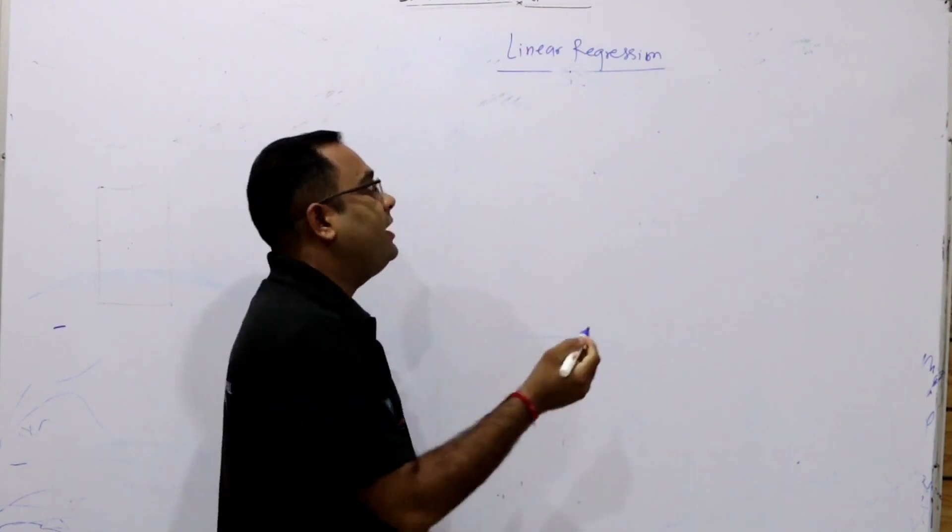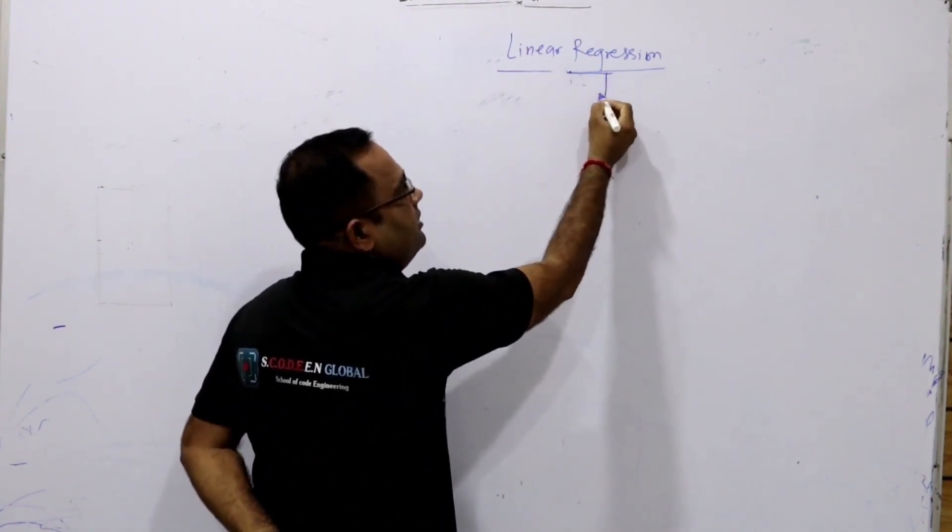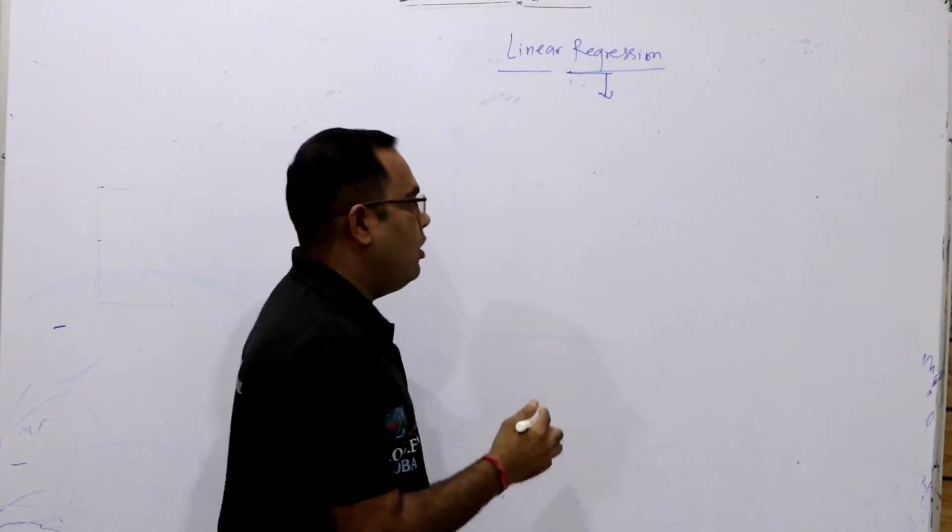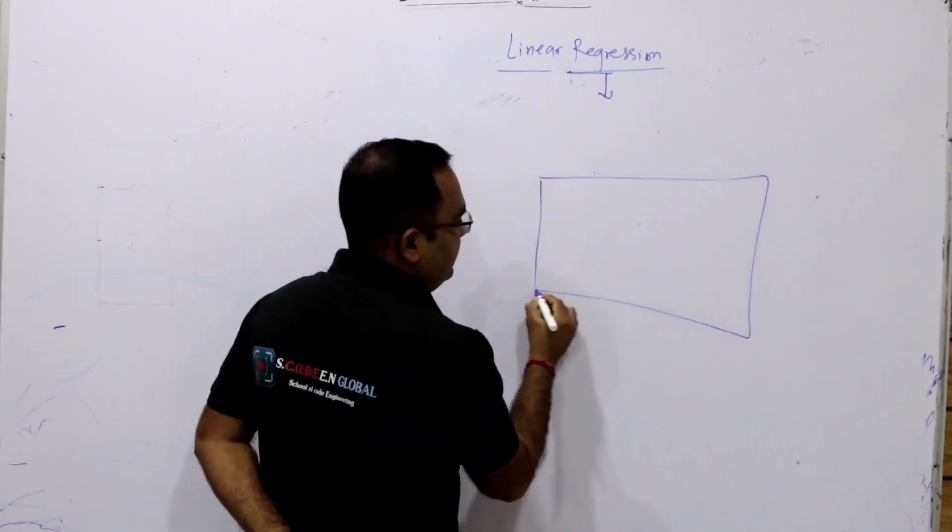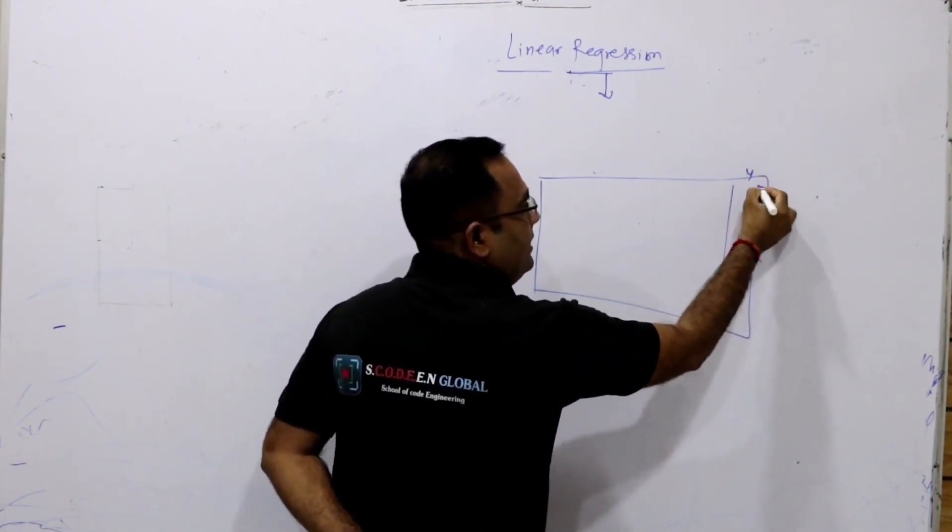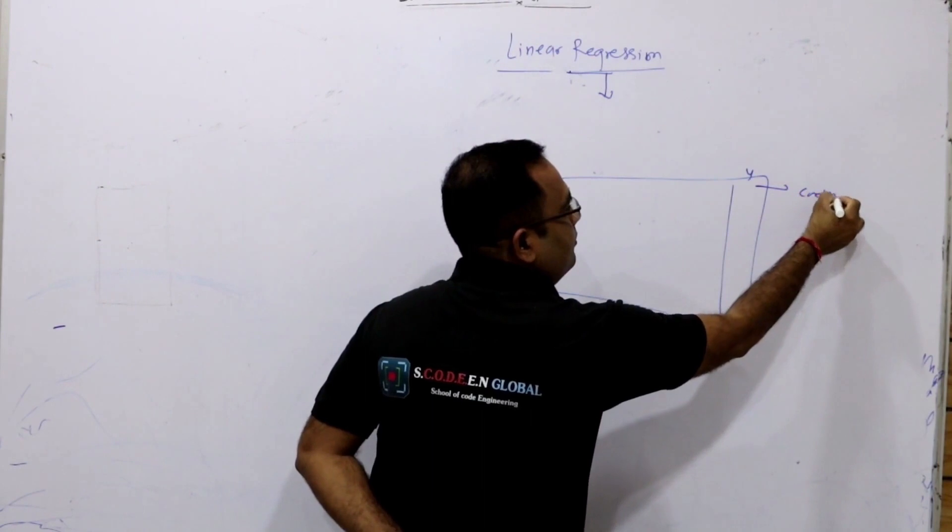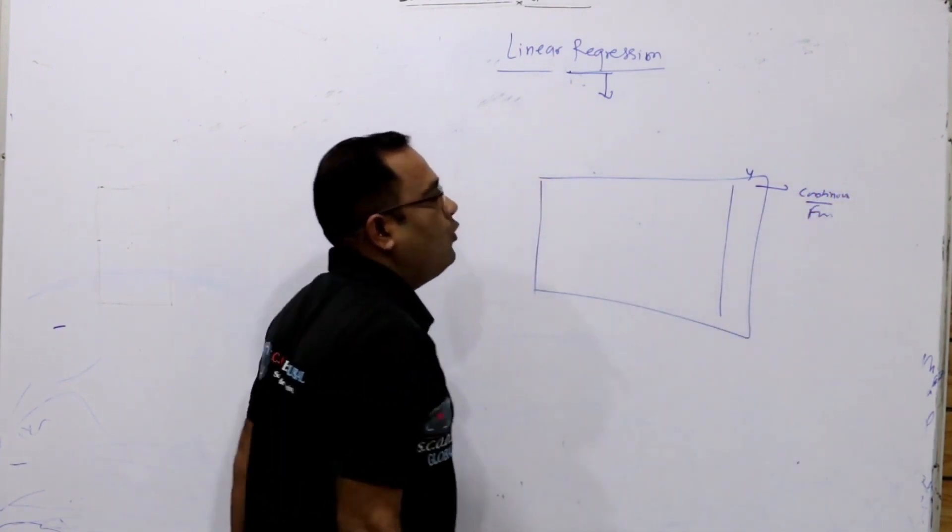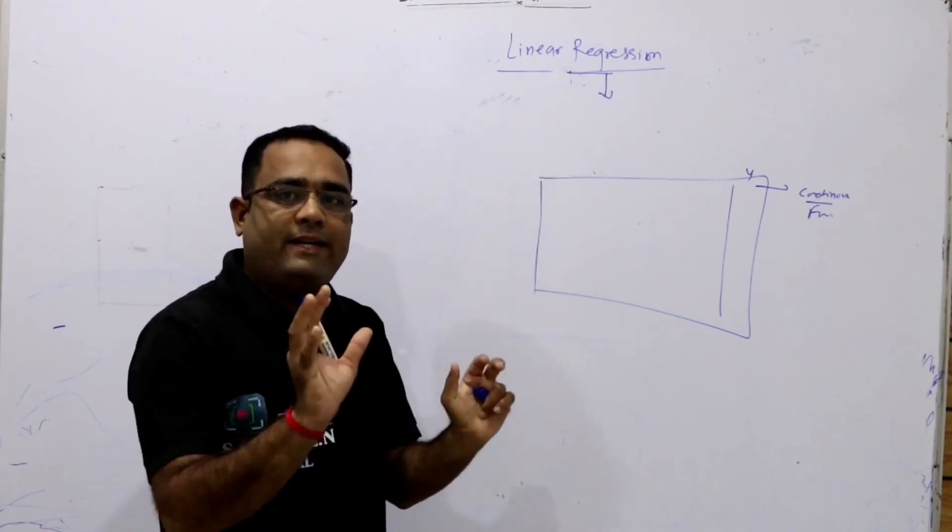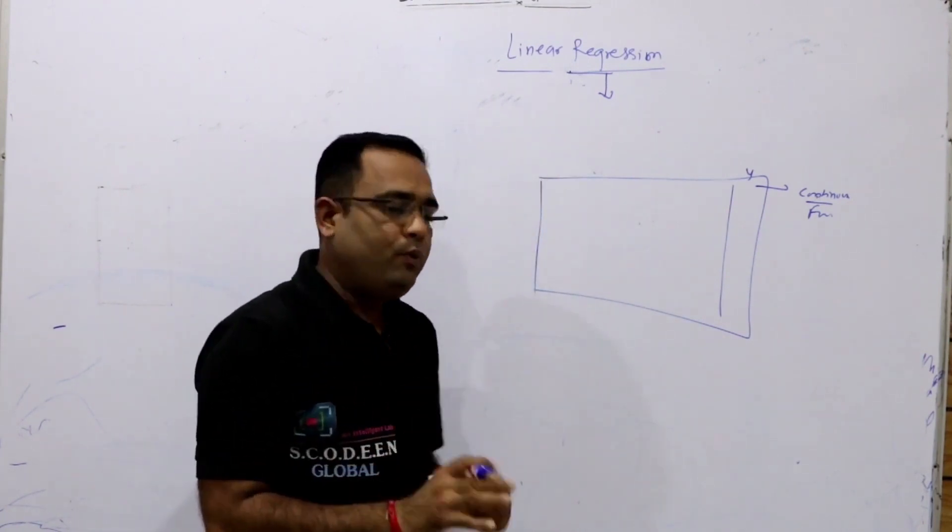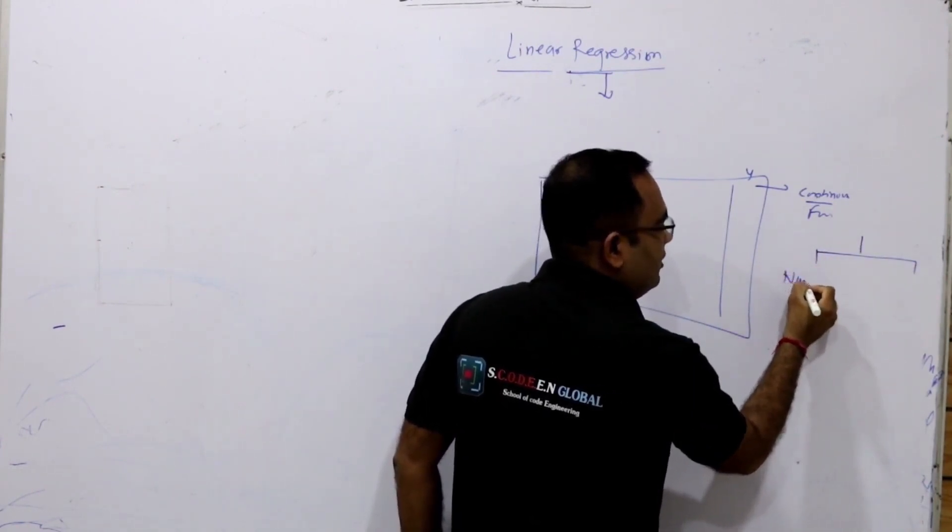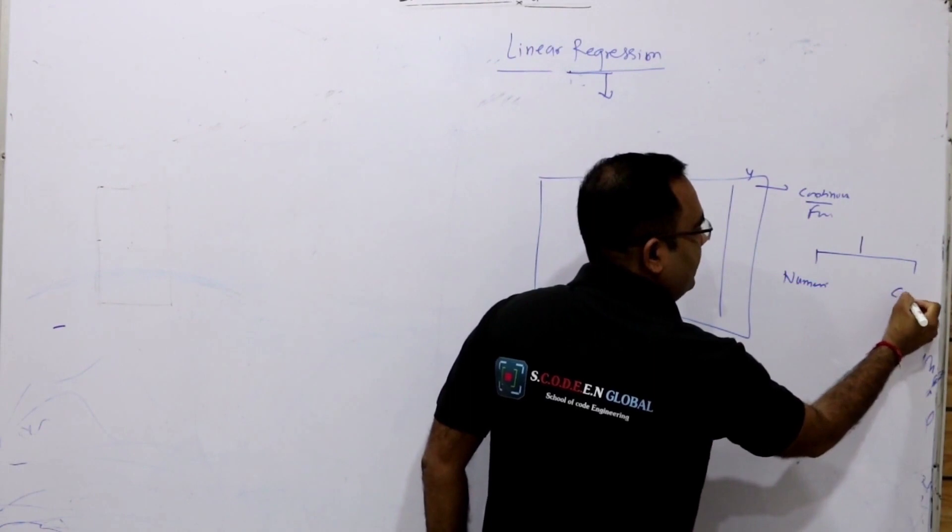So, first of all, this regression word is nothing but continuous variable. If we have a data set and this data set having a target variable, this is Y and it is in a continuous form. So, we can go for the regression algorithm. Basically, data is two types. One is numerical data and one is categorical data.